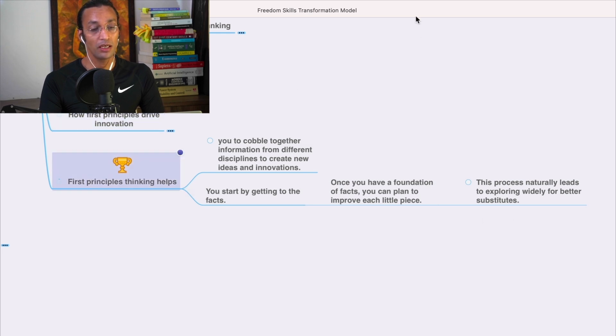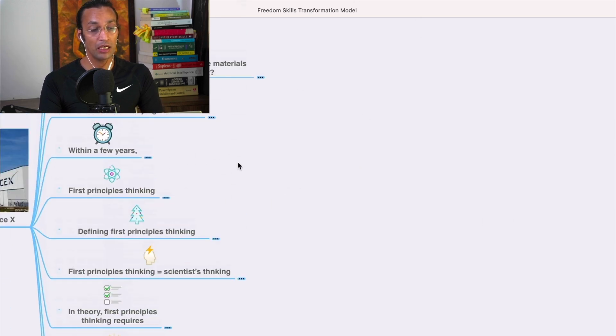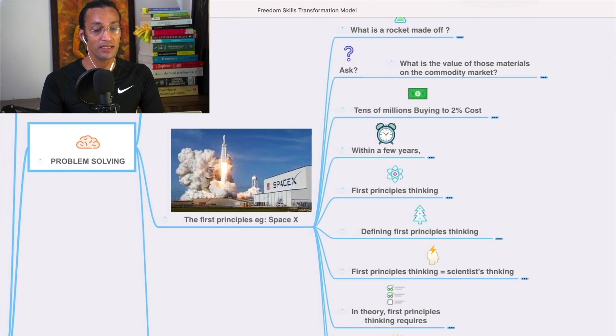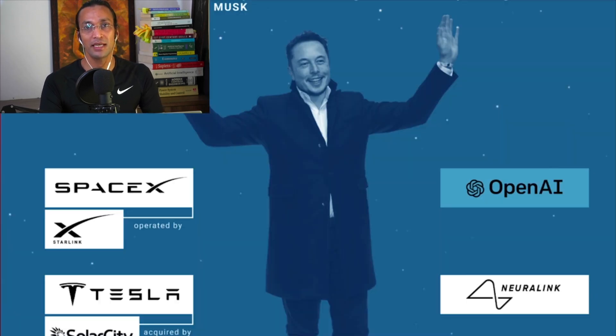It helped Elon Musk make SpaceX company, and he applied this principle in Tesla, in OpenAI, and other companies. He is going to be a centibillionaire. This is the power of first principles applied to problem solving.